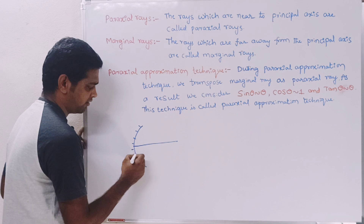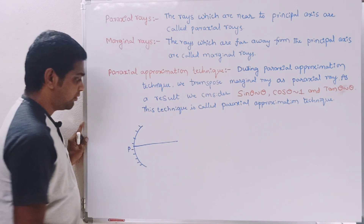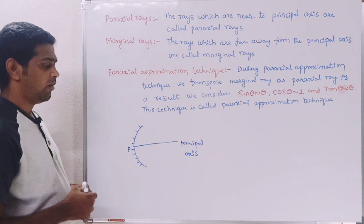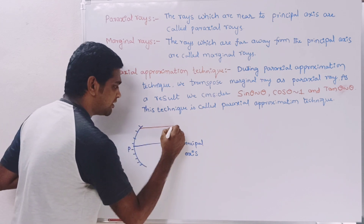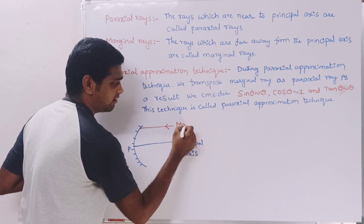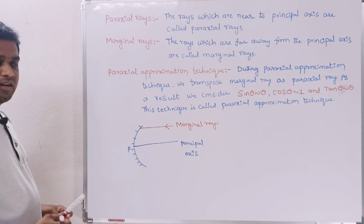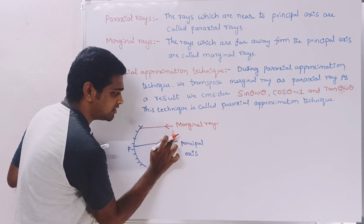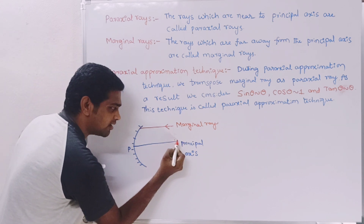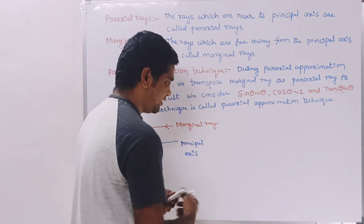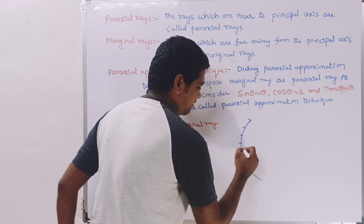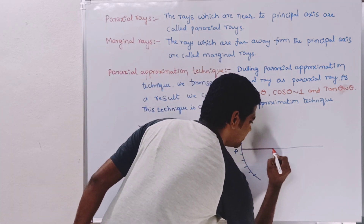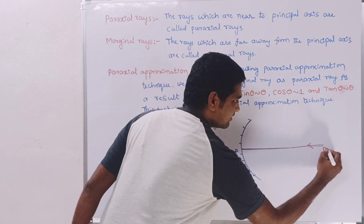I have taken a concave mirror whose pole is P, with the principal axis drawn. Initially I take a ray that is far away from the principal axis — this acts as the marginal ray. I am now going to transpose this marginal ray as a paraxial ray. In the next diagram, the marginal ray is taken as a horizontal paraxial ray, very near to the principal axis.